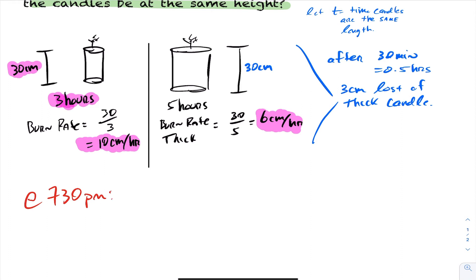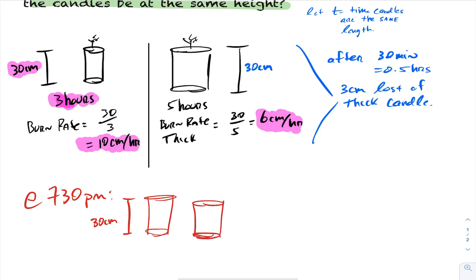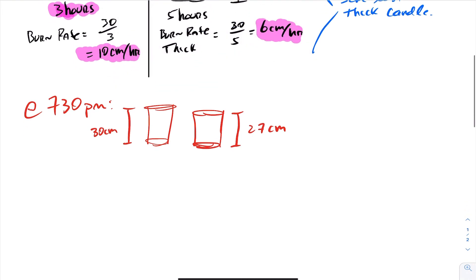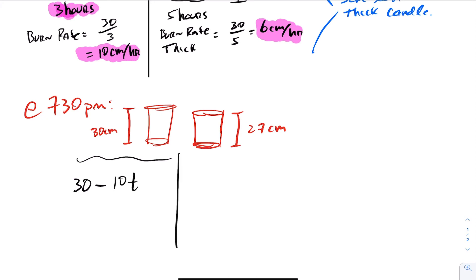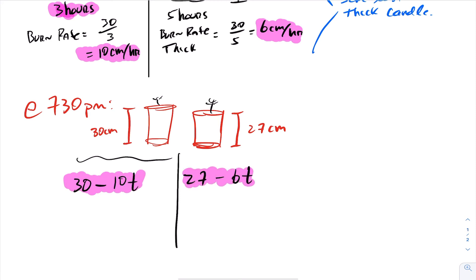Therefore, at 7:30 PM the thin candle is still at 30 centimeters, while the thicker candle is at 27 centimeters. From 7:30 PM onward, the length of the thin candle is 30 minus 10t (losing 10 centimeters per hour), and the length of the thicker candle is 27 minus 6t (losing six centimeters per hour). We want to find when these two lengths are equal.